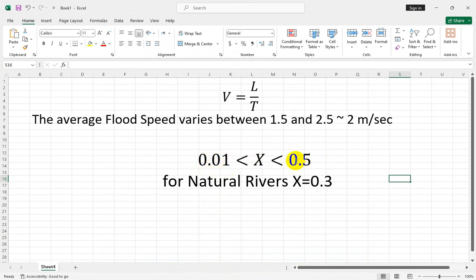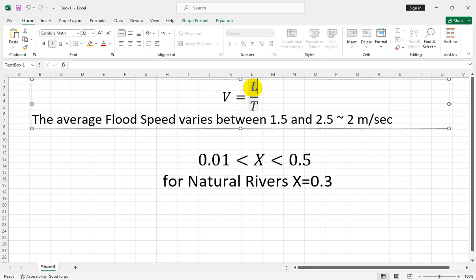The X parameter varies from 0.01 to 0.5, and for natural rivers you can assume this variable equals 0.3. For estimation of the K parameter, you can use uniform flow, which indicates that the speed equals length divided by time. L is the river length and you can easily calculate it based on Google Earth or digital elevation models.